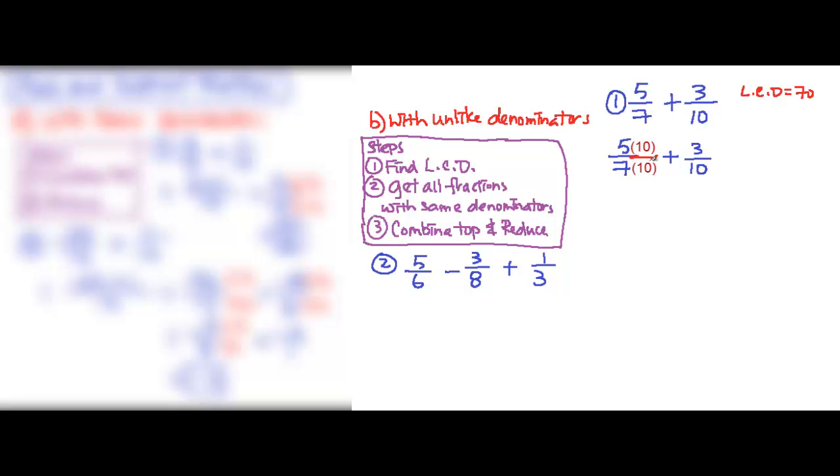Then we move on to the second fraction, which is 3/10. So for here, you have 3/10, and to get to 70, the 10 need to multiply to 7.